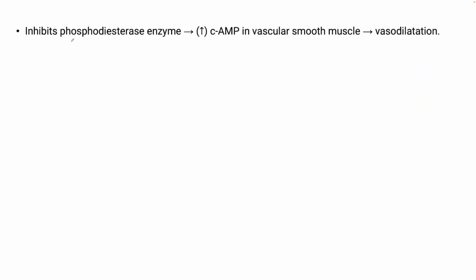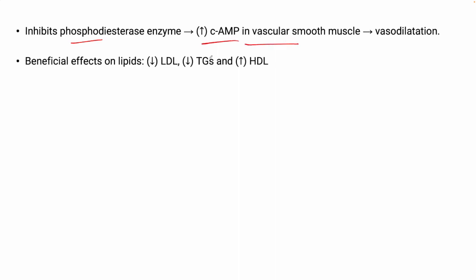Prazosin inhibits the phosphodiesterase enzyme and hence increases the cAMP pathway in the vascular smooth muscles. cAMP causes relaxation — similar to beta-adrenergic agonists — so it increases relaxation in vascular smooth muscles and hence leads to vasodilation.